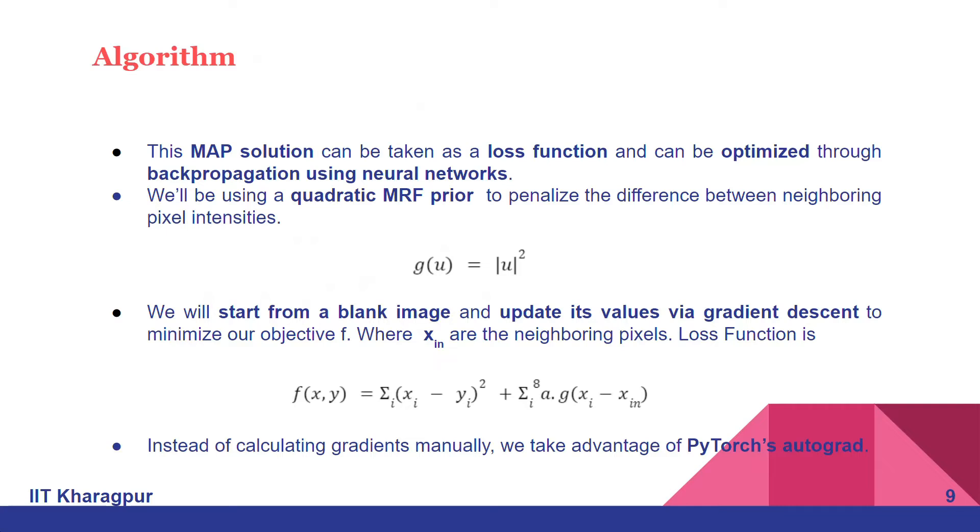We'll be starting from a blank image and update its values via gradient descent to minimize our objective function where X_n are the neighboring pixels.